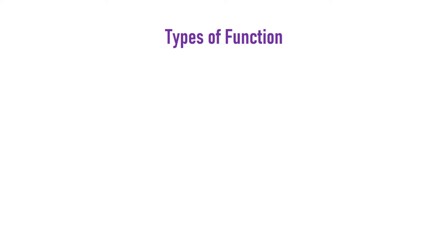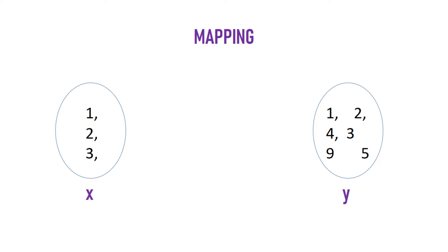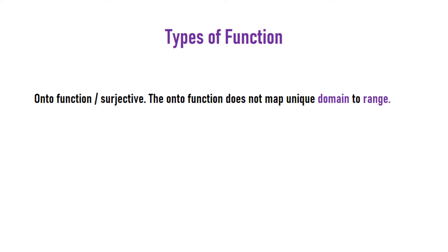The first type is one-to-one or the injective function. If the domain maps to a very unique range, the function is one-to-one. In the earlier example, every value of x maps to just one value of y. So x squared is a one-to-one function within the limits of the values we have for x.